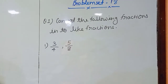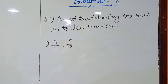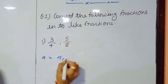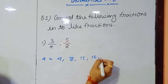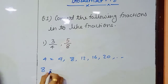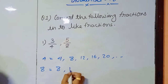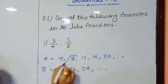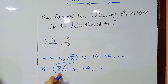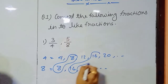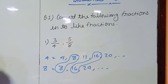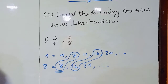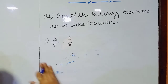Problem Set 18, Question 1: Convert the following fractions into like fractions. First we have to find out the multiples of the denominators. For example, the multiples of 4 are: 4, 8, 12, 16, 20 and so on. The multiples of 8 are: 8, 16, 24 and so on. We identify the common multiples — here we have 8 and 16 — but we take the least common multiple, which is 8.